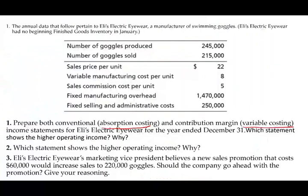Let's take a look at this exercise. We have the annual data of Eli Electric Eyewear — they manufacture swimming goggles with no beginning finished goods inventory in January. Number of goggles produced: 245,000 units. Number of goggles sold: 215,000 units. That means they have 30,000 units unsold — in other words, in ending inventory. They sell each unit for $22.